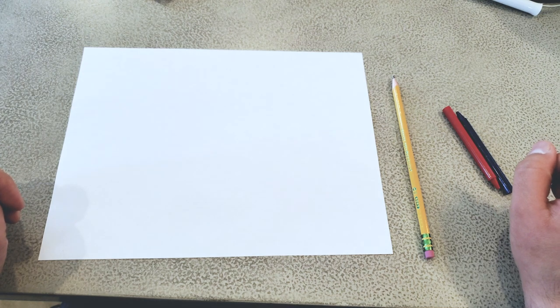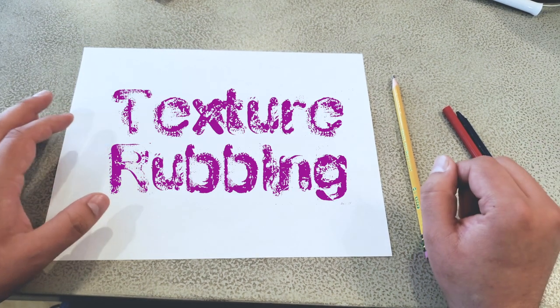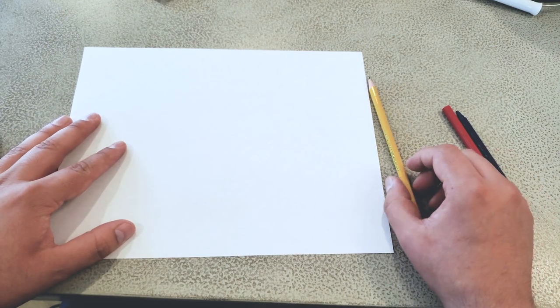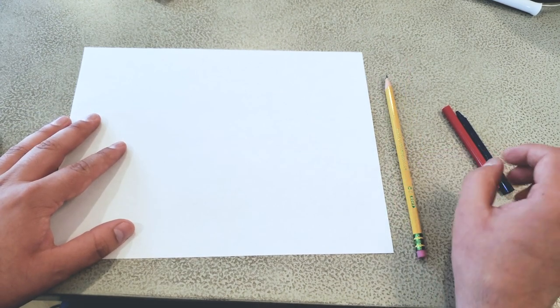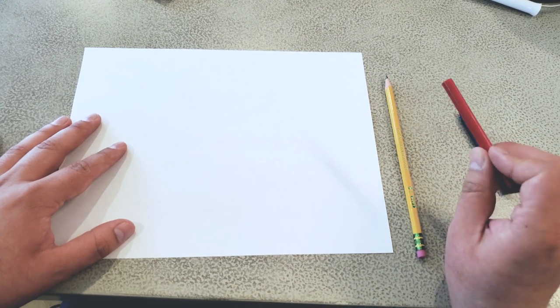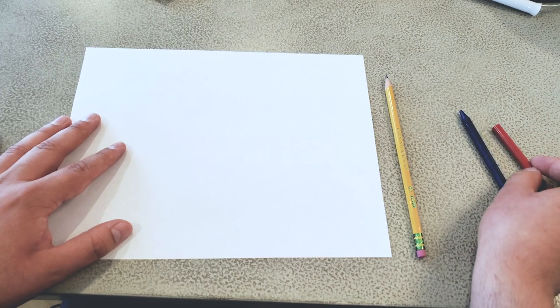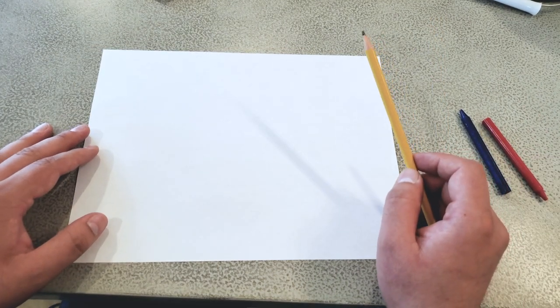So for today's lesson, we're going to create a texture rubbing. You're going to need a piece of paper and a pencil. And if you have them, crayons that don't have the wrapping on them because you'll be using the full side of them. First off, we'll start to create a texture rubbing.